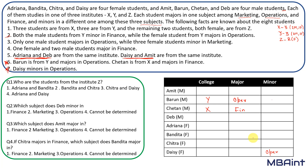Adrina and Daisy would either belong to X or Y. The two female students who belong to institute Z are definitely not Adrina or Daisy, so those two must be Bandita and Chitra — they are from Z.